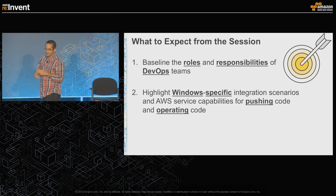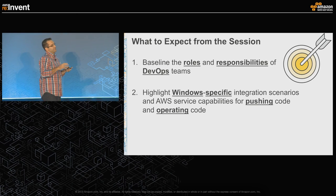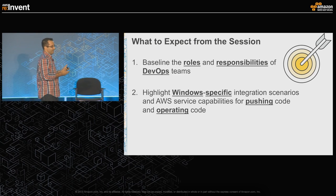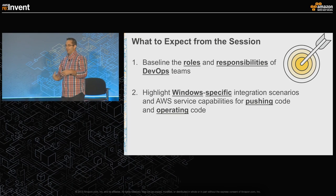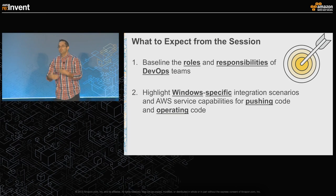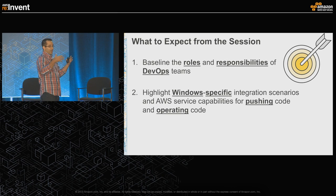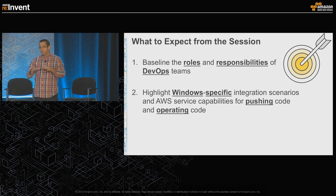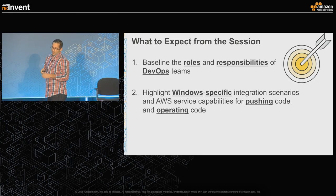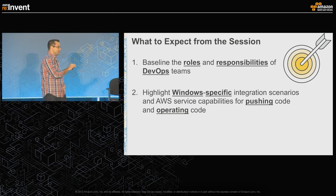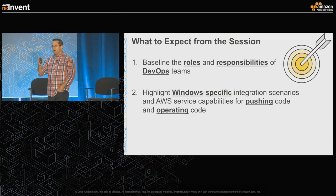We're going to baseline, talk about DevOps, and absolutely hit on Windows-specific elements. That doesn't mean the principles aren't germane to Linux environments, but I'm going to literally talk about features, capabilities, and services — and times when things became Windows-enabled. There's been a long history of Linux first, Windows second. I've been focusing on SQL Server on RDS and how that's evolved, and we keep seeing a lot of interest. AWS has a Windows story. I break it into two key categories: pushing code and operating code — the two sides of the automation spectrum.